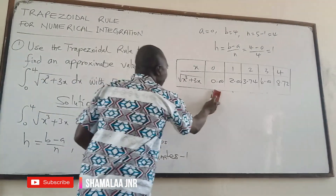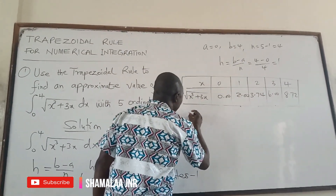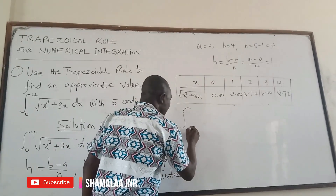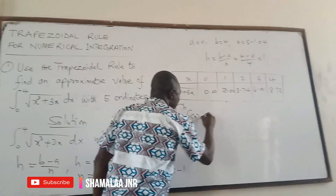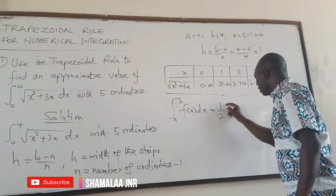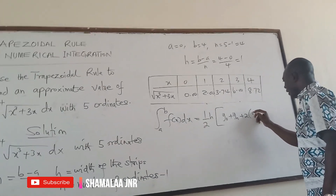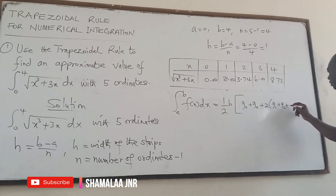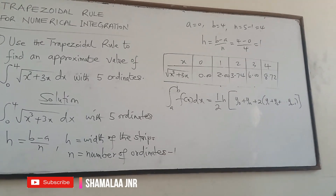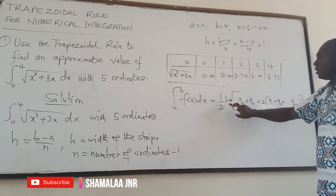Having obtained the table, we now use the trapezoidal rule formula. The formula states that the integral from a to b of f(x) dx is approximately equal to one-half h times: y0 plus yn, plus 2 times the sum of y1 plus y2 plus ... plus y(n-1).